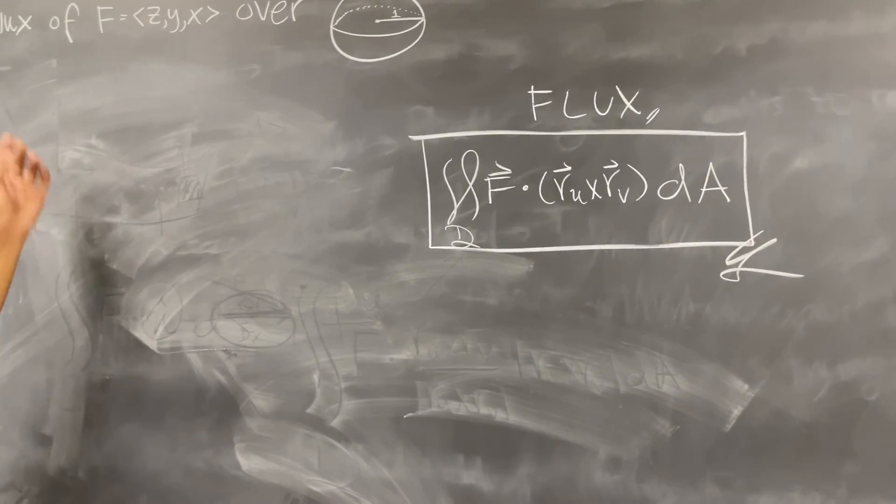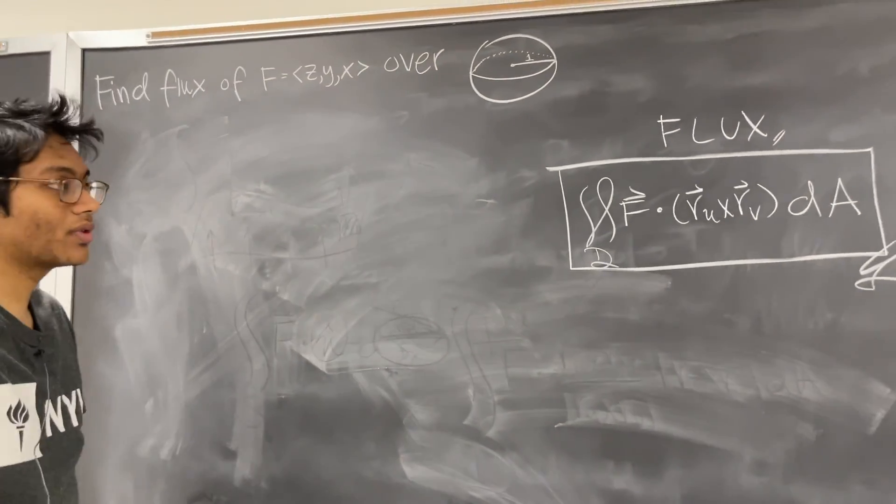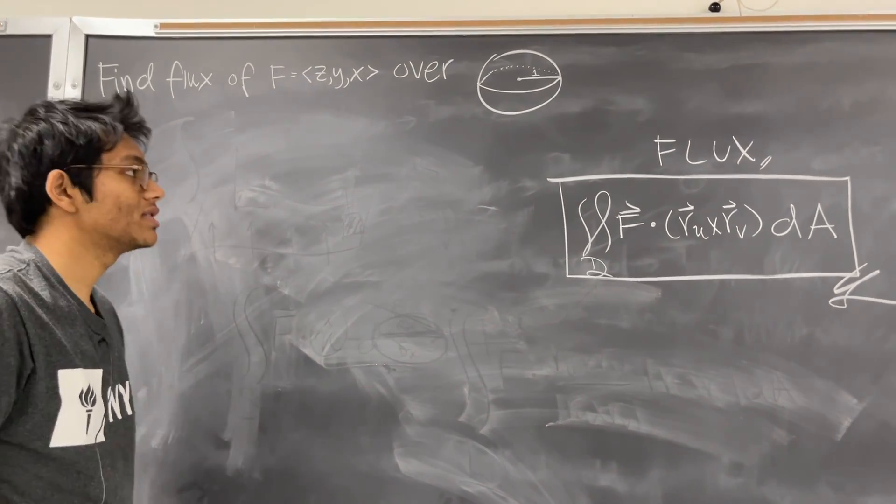So we want to find the flux of these vector fields over this surface. So the first thing you want to do is parametrize your surface, right?